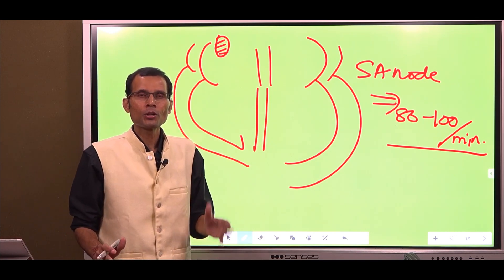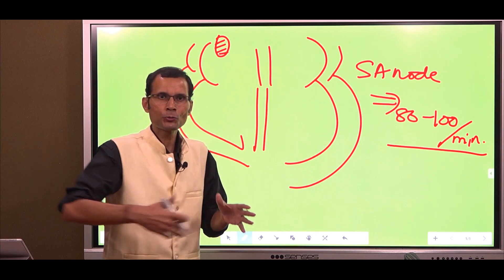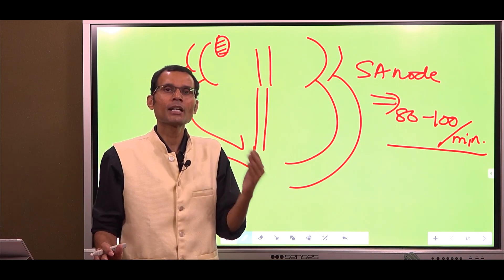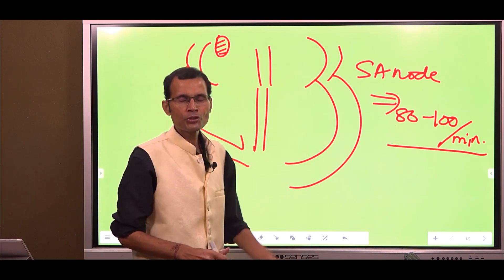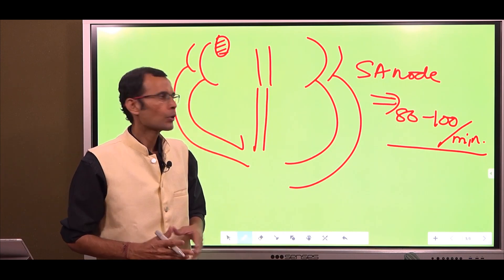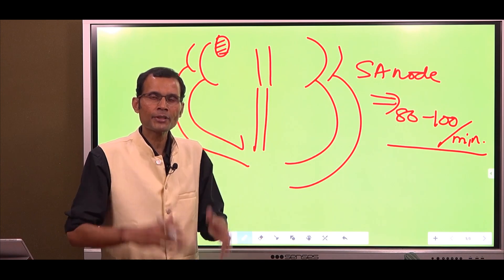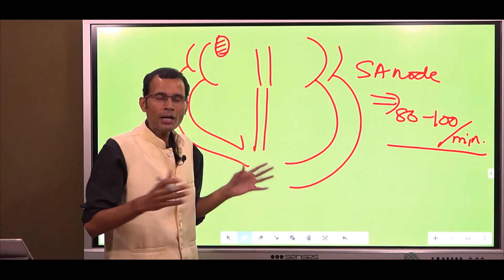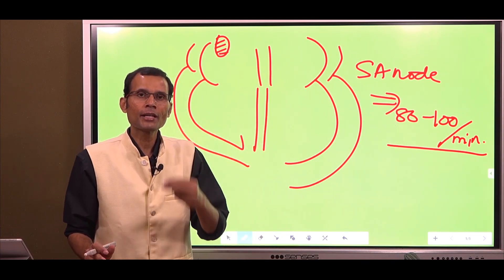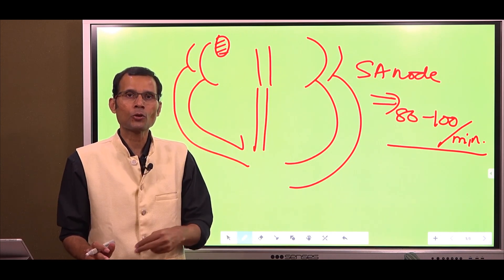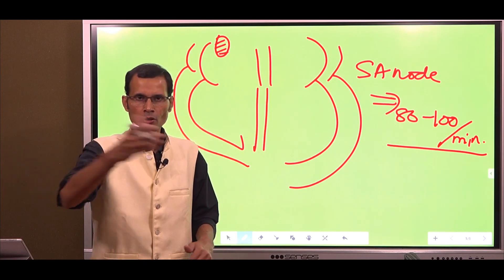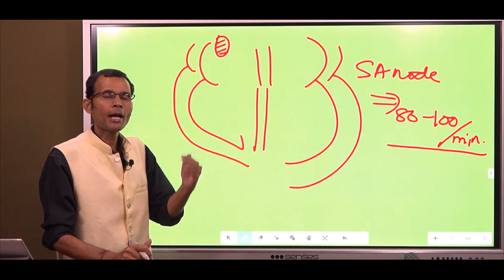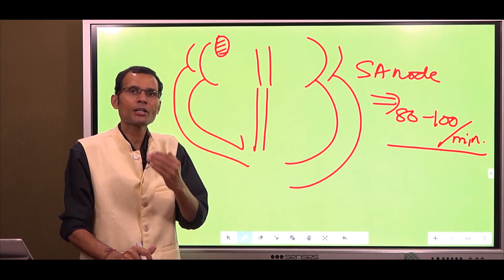But look at the AV node, bundle of His, and Purkinje fibers — these are all the students seated in the classroom, and the SA node is the teacher teaching with the highest frequency. Therefore, everybody has to follow that speed. If the SA node generates 72 impulses per minute, all parts in the heart will have to excite 72 times per minute, and the heart rate will be 72 beats per minute. But those parts also have their own natural rhythmicities. Just like students, each student has a different speed of understanding — each part in the conducting system has its own intrinsic or natural frequency of excitation.